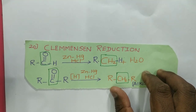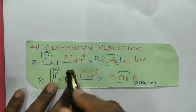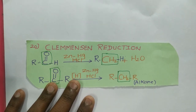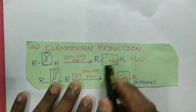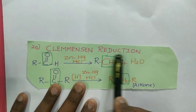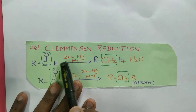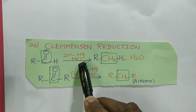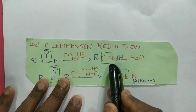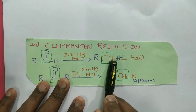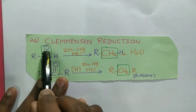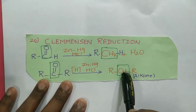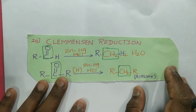What is Clemmensen reduction? When a C=O (carbonyl group) is getting converted into CH₂, we use Clemmensen reduction. Clemmensen reduction always takes place in the presence of zinc amalgam and HCl. The zinc merged in HCl liberates hydrogen gas, giving the reduced product. So C=O gives CH₂. The starting material may be an aldehyde or a ketone. If the carbonyl group is converted into CH₂, the product is an alkane. The reagent is zinc amalgam and HCl.